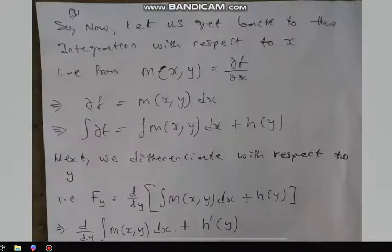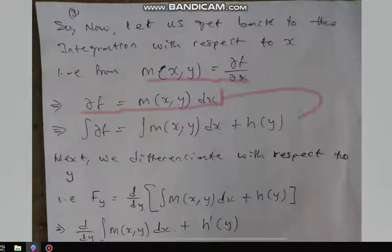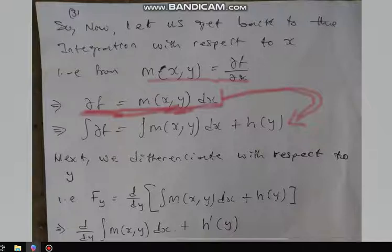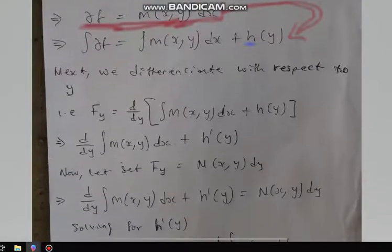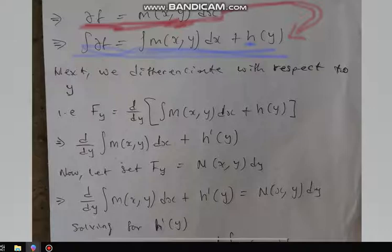Getting back to the integration with respect to x — we defined M to be ∂f/∂x, cross-multiplied, and integrated to get f = ∫M dx + h(y). The constant from the indefinite integration is a function of y. The next step is to differentiate with respect to y: ∂f/∂y = ∂/∂y[∫M dx + h(y)].